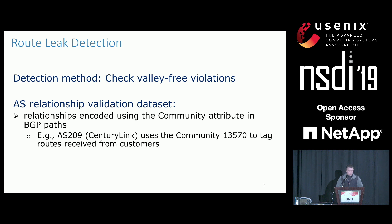We adopted a conventional method for detecting route leaks by checking valley-free violations in BGP paths. We also want to introduce how we derived the AS relationship validation dataset. As ASRank did, we used the AS relationships encoded using BGP community attributes. The BGP community attribute is an optional transitive BGP attribute used to attach metadata on BGP paths. Some ASes publicly document the meaning of some of their BGP community values. For example, CenturyLink uses this community value to tag routes received from its customers. In this way, we can construct a set of real AS relationships for validation purposes.